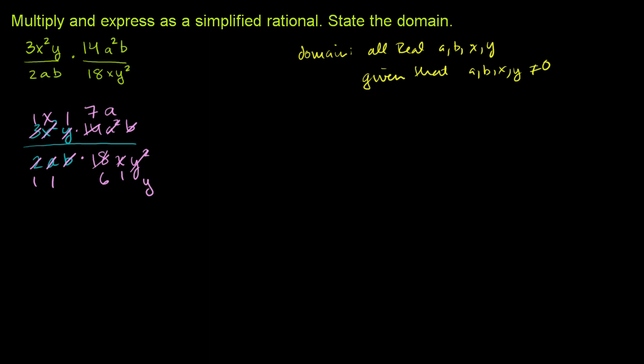So what are we left with? We are left with, in the numerator, all we have—these 1's we can ignore, that doesn't really change the number—we have a 7 times a times x. That's what we have in the numerator. And in the denominator, we just have a 6y.